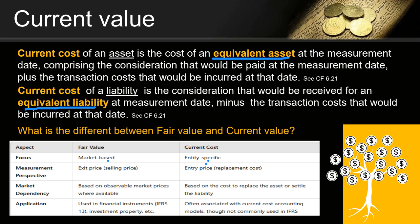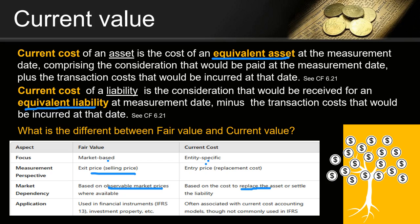From a measurement perspective, fair value looks at how much something is selling for — it's an exit price. Whereas current cost asks how much it would cost to replace the asset — an entry price. So one is replacement cost, the other is selling price. Both are allowed under IFRS, but fair value is more commonly used, while current cost is sometimes less used because it's trickier to calculate.